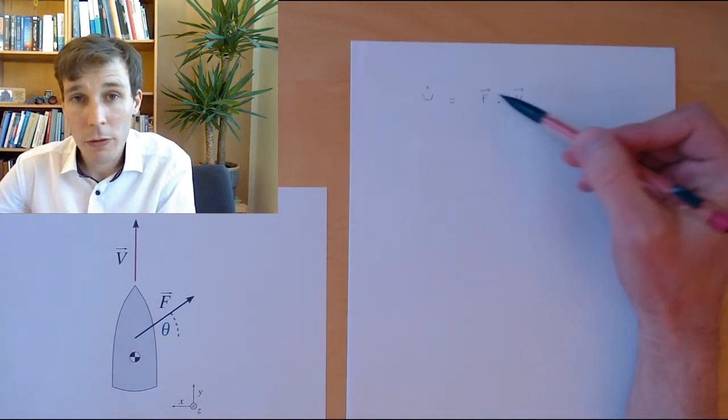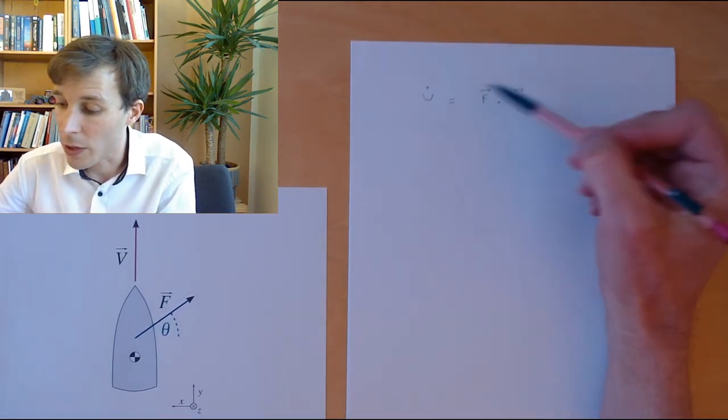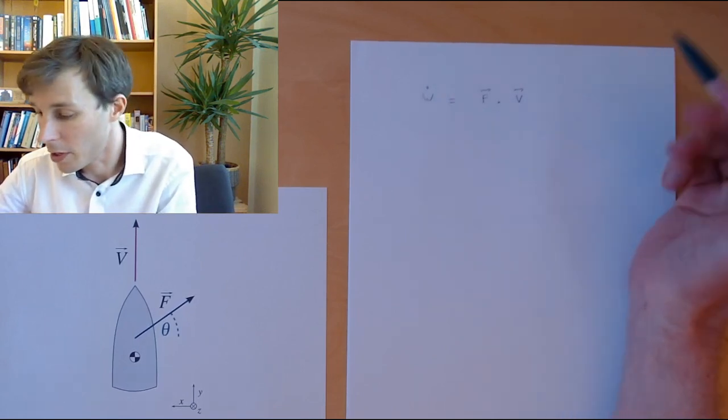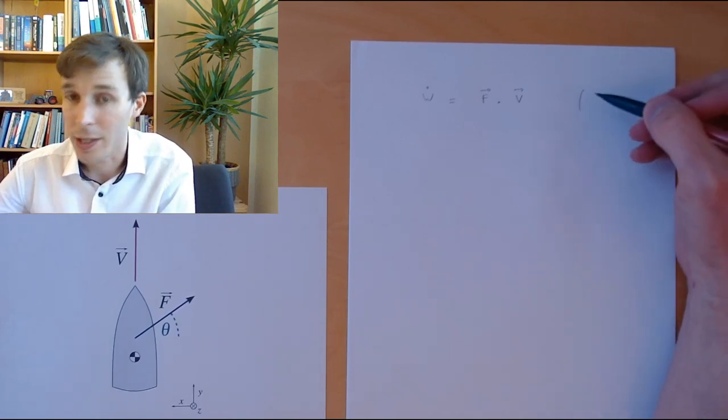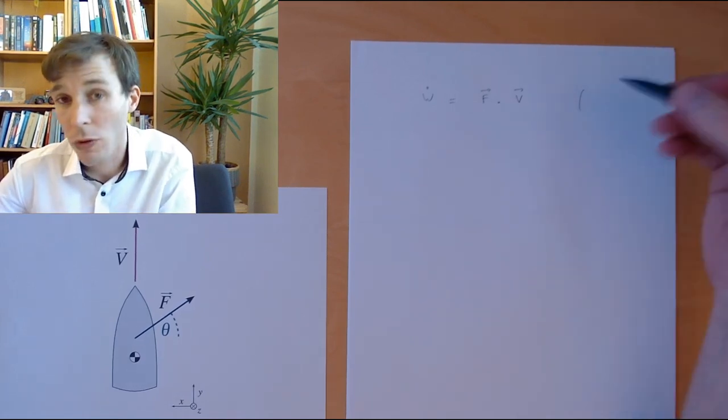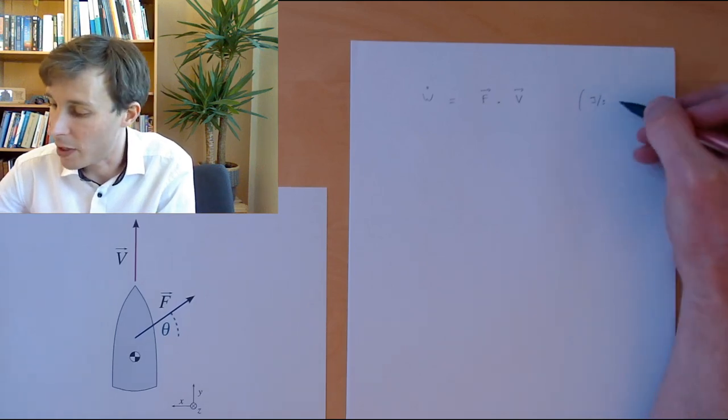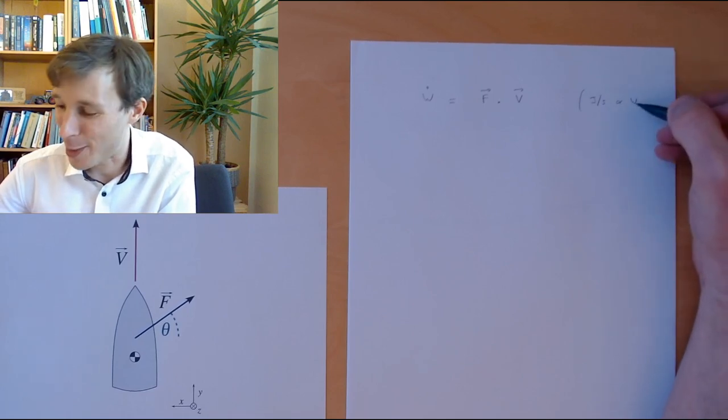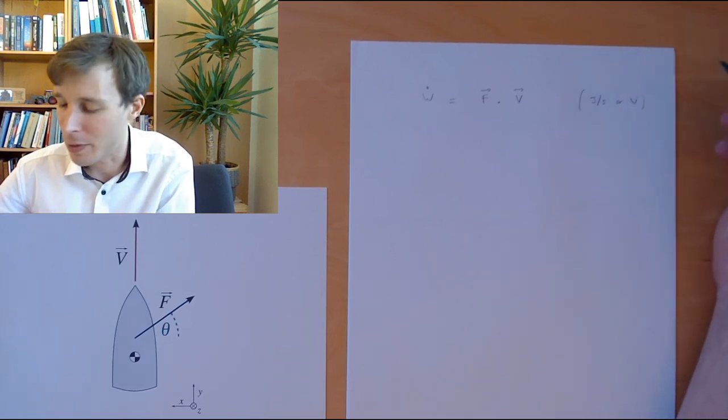So the power W is the dot product of the force and the velocity. The dot product of two vectors is a number, it's a scalar value. So it's okay to have two vectors on the right side of the equation and on the left side just a number. The unit of work would be joules, and the unit of work per second would be joules per second or watt.